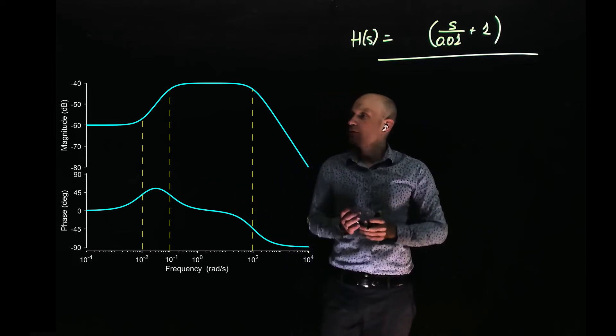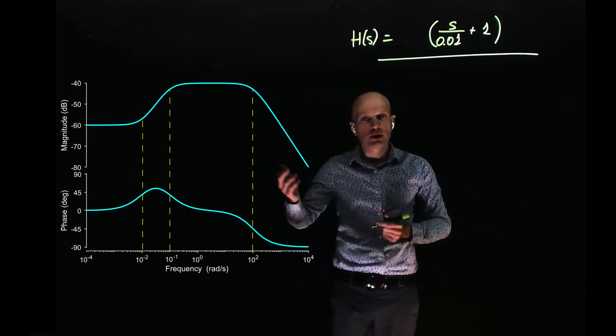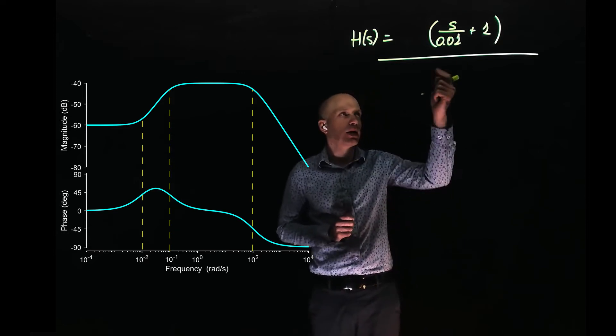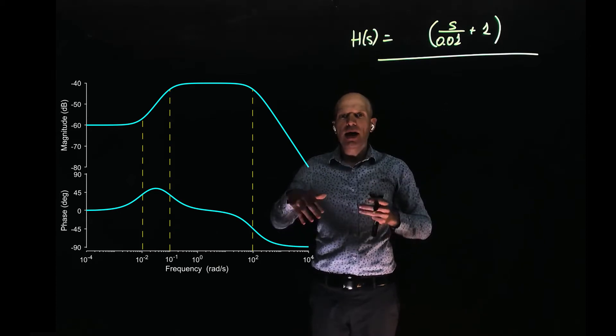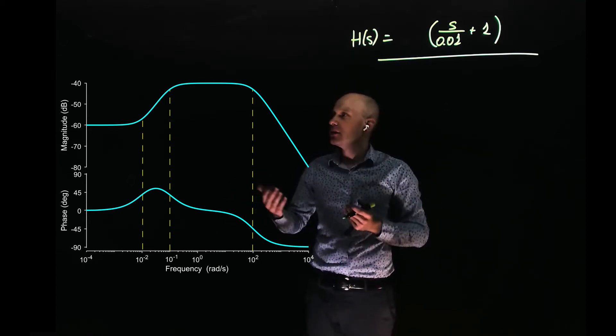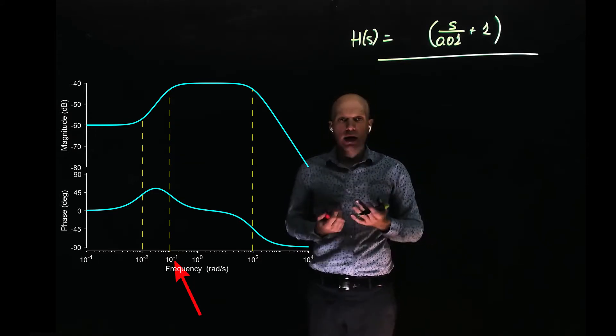If you now keep increasing the frequency, what happens? You notice that the slope that was going up by a factor of 20 decibels per decade, which indicates the presence of a zero, becomes flat. It became flat past a frequency of 0.01 radians per second, because we encountered a pole.